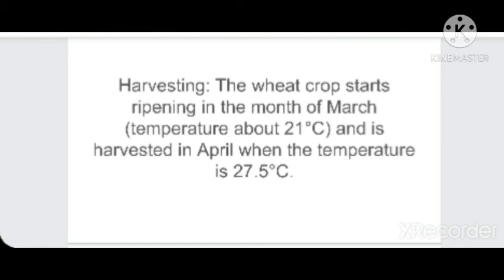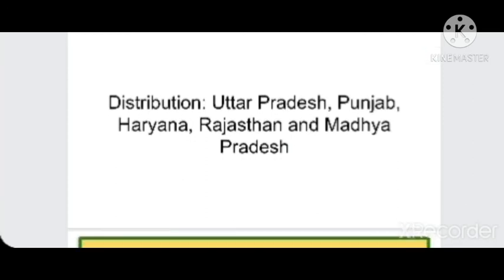The largest producer of wheat in India is Uttar Pradesh. Uttar Pradesh, Punjab, and Haryana together are named the 'Granary of India' because they produce the largest amount of wheat. This title came because of the Green Revolution, which multiplied crop productivity in the northern plains. Other important states for wheat cultivation are Rajasthan and Madhya Pradesh.